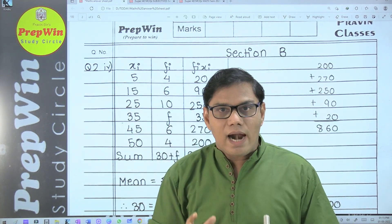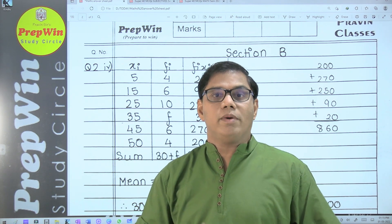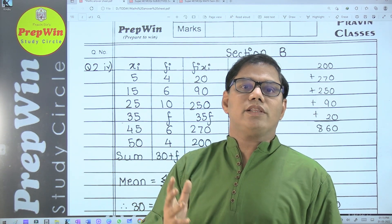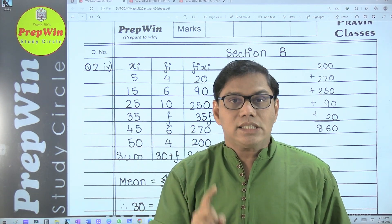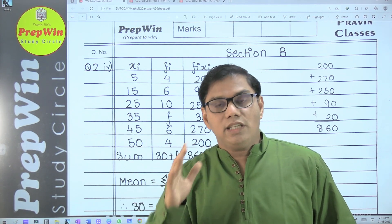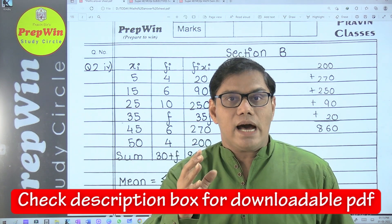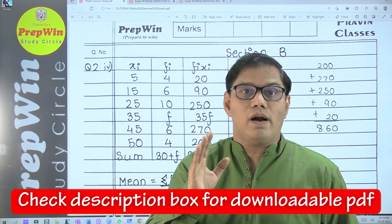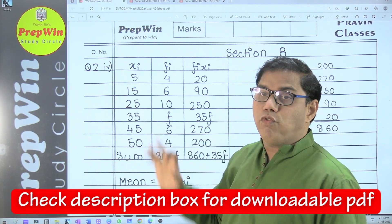You don't need to start with question number two. No problem if you directly want to start with question number four. But all sub-questions of that question have to be solved together. Start from any question, but solve all sub-questions of that question together. Like a student has solved question number two's fourth sub-question first - it is absolutely fine.